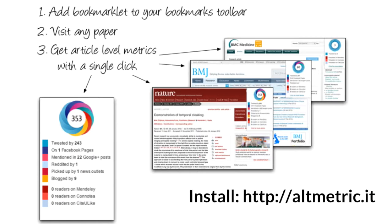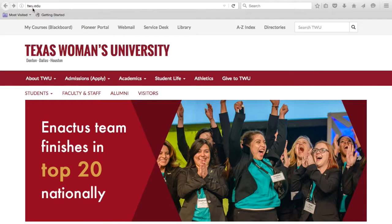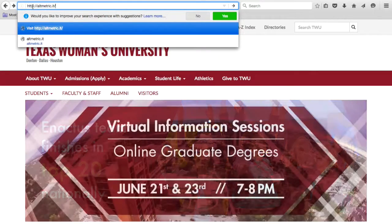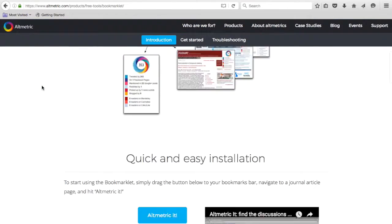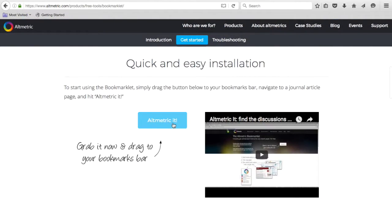You can discover the Altmetric score for any piece of research that has a DOI—a Digital Object Identifier. Major publishers assign these to all articles, but some smaller journals may not. You can install the Altmetric bookmarklet to your bookmarks toolbar by going to altmetric.it, scrolling down to the quick and easy installation, grabbing the Altmetric button, and dragging it to your bookmarks bar.